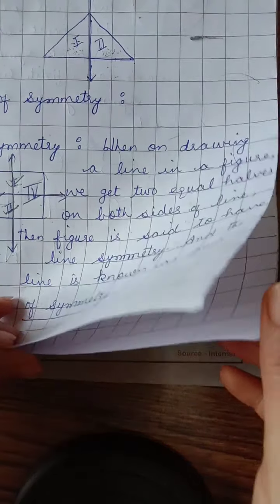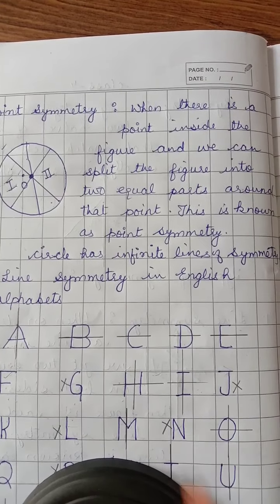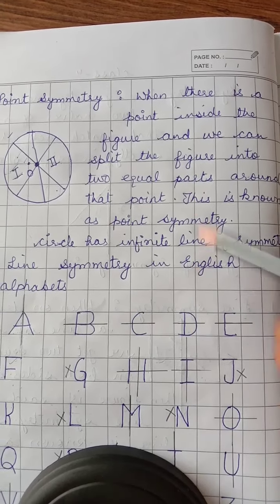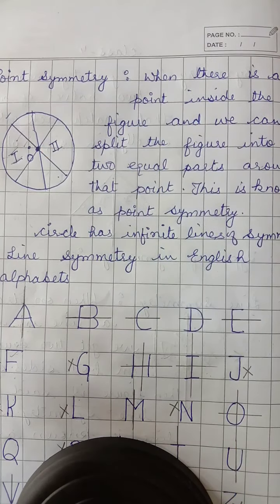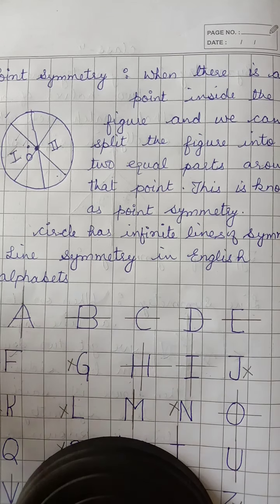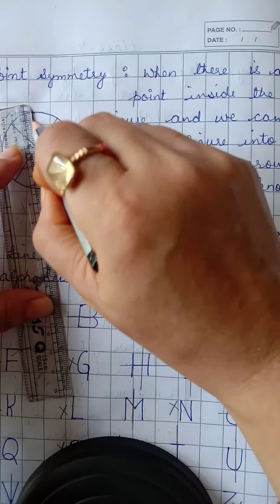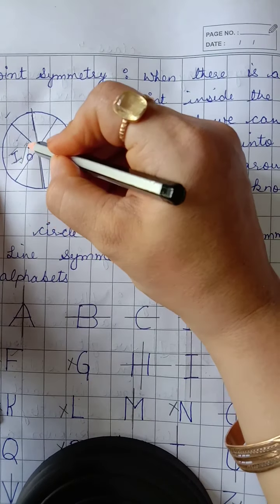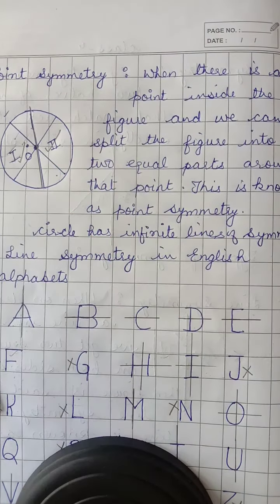The second type of symmetry is point symmetry. Point symmetry is when there is a point inside the figure and we can split the figure into two equal parts around that point. For example, in this circle there is a point at the center, and I can divide the circle through the center into two equal parts. I have drawn a line which is known as the diameter.